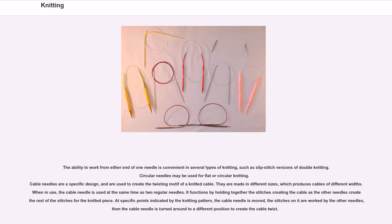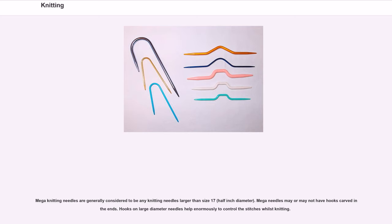Circular needles may be used for flat or circular knitting. Cable needles are a specific design used to create the twisting motif of a knitted cable; made in different sizes, which produces cables of different widths. The cable needle holds together the stitches creating the cable as the other needles create the rest of the stitches. At specific points indicated by the knitting pattern, the cable needle is moved, the stitches on it are worked by the other needles, then the cable needle is turned around to a different position to create the cable twist.